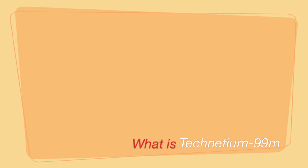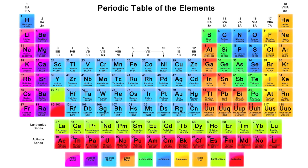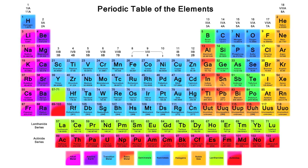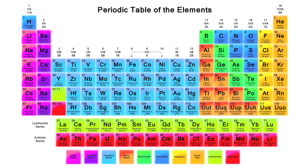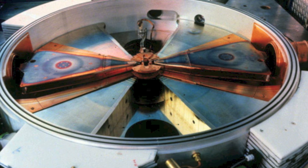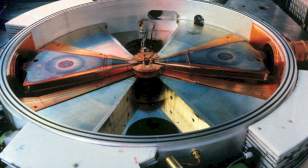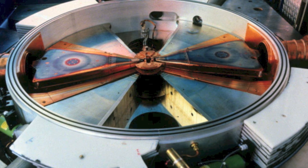Technetium-99m is an isotope of the element technetium, or Tc. Isotopes of an element all have the same number of protons but different number of neutrons. It is a radioactive tracer isotope which is extensively used in nuclear medicine. This may not make much sense to you now, however we will come back to this later during the video.